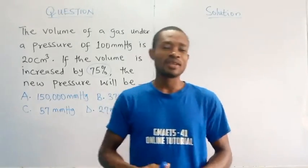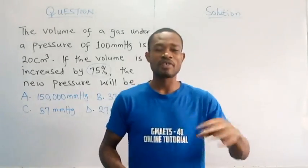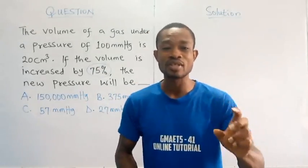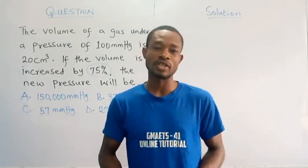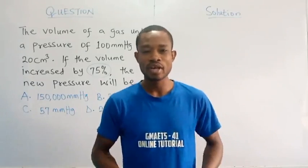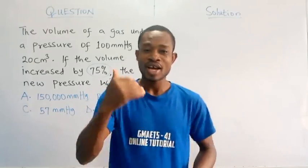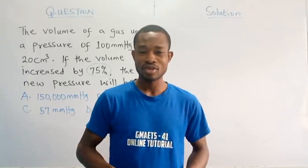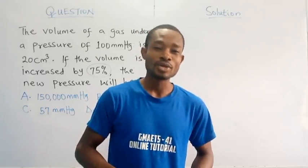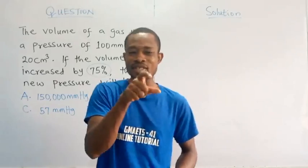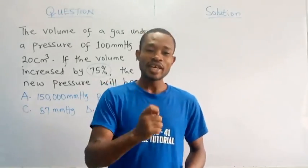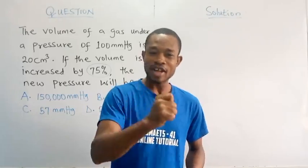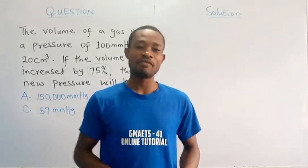I can remember, I think in Basic 5, Primary 5, we deal with percentage increase and percentage decrease of a given quantity. And let me say this quickly: if I give you a value and I tell you to increase that value by a particular percentage, what you are going to do is simply, that percentage I give to you, take that percentage value off that given value.